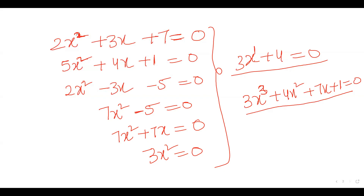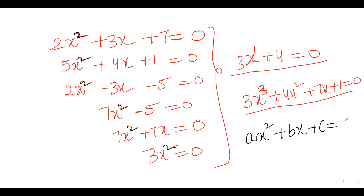To identify a quadratic equation, the basic rule is that the degree must be 2 — the maximum power must be 2. Only then do we call it a quadratic equation. The general form is ax² + bx + c = 0.